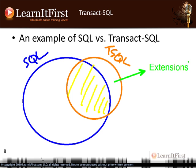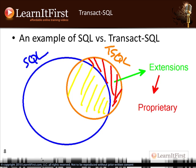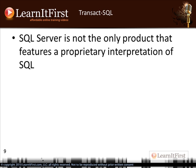T-SQL implements some of the standard but not all, and T-SQL also defines things that are not in the standard at all — concepts and ways of implementing things that go beyond it. These extensions are proprietary, meaning if you write your code in those extensions, it's guaranteed not to work on anything except Microsoft SQL Server. You might think that sounds like a bad idea — why not just implement the standard?